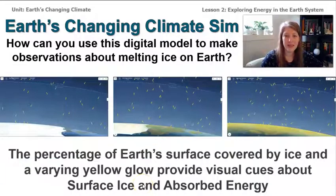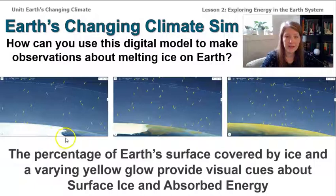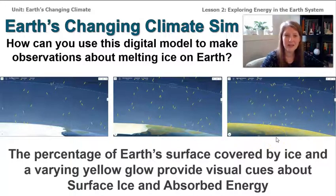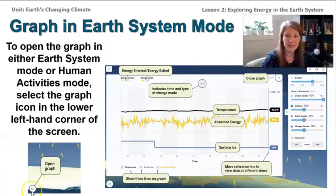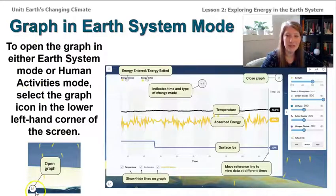You can also see the amount of ice on the surface, and it can change. You can see a lot of ice on Earth's surface, a medium amount, and no ice. You'll also notice that the Earth itself is glowing a little bit — that's the sim showing how much energy has been absorbed by the surface. The more energy absorbed, the more it will glow yellow. There's also a graph you can open by selecting the graph icon in the lower left corner of the screen.